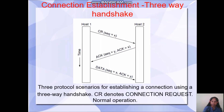Now, connection establishment. The method we are using here is three-way handshake. We have host1 and host2, and time goes downward. Initially, host1 sends a connection request to host2 with sequence number X. Host2 sends an acknowledgement for the connection request received, with sequence number Y, and it also carries acknowledgement for sequence equal to X. Now host1 can send data to host2. This is the three-way handshake process of establishing a normal connection.